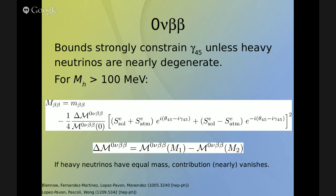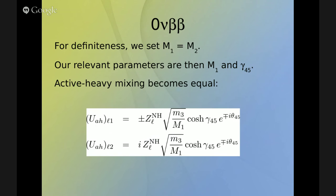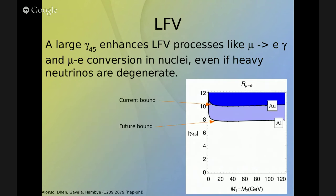What we're going to do is set M1 equal to M2 for definiteness. Thus the only parameters we care about are M1 and gamma_45, and the active-heavy mixing becomes the same for both neutrino 1 and neutrino 2.